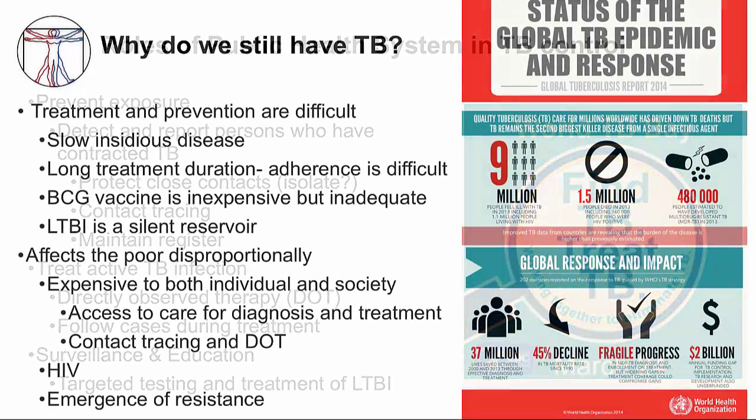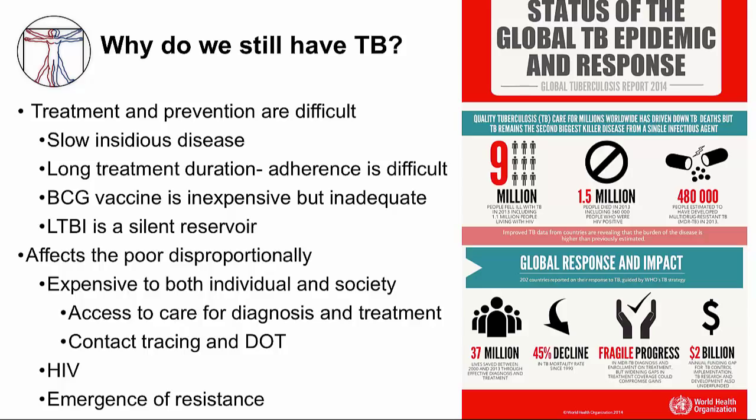Globally, we don't have control of tuberculosis, and there are many reasons why. TB is a slow, insidious disease and treatment is long in duration, making adherence difficult. BCG vaccine is inexpensive but inadequate, and LTBI is a silent reservoir. TB is also a social issue — it affects the poor disproportionately, partly because social, economic, and political factors affect medical care. Access to care and antibiotics may be too expensive, and the infrastructure for DOT and contact tracing may not exist.